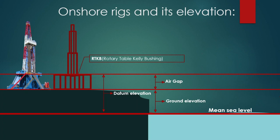This is our rig — shown in a schematic here. This is the Earth, and here is the cellar, where we start drilling from. This is the substructure of the rig. And this is the rig floor, also called RTKB — Rotary Table Kelly Bushing. The elevation from the ground to the rig floor or RTKB is called the IR Gap, or simply RTKB elevation. Almost all calculations reference this point — the datum elevation from the RTKB or rig floor to Mean Sea Level.